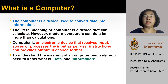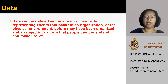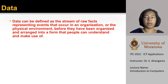To understand the meaning of a computer clearly, you need to know what data and information are. Data can be defined as the stream of raw facts, concepts, or instructions in a formalized manner, which should be suitable for communication, interpretation, or processing by human or electronic machine.